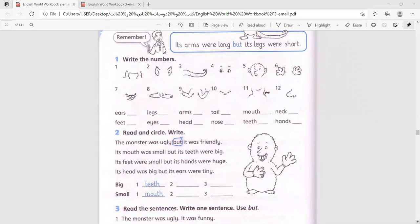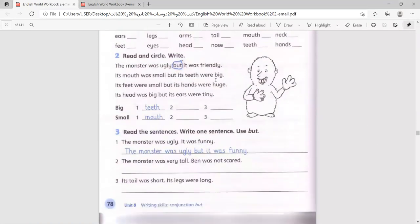Now let's move on to the last question and it is the meaning of the word but. We write but for things that are different than each other. The monster was ugly but it was funny. Ugly and funny. They are the opposite.